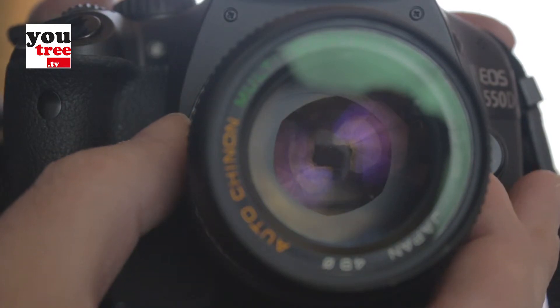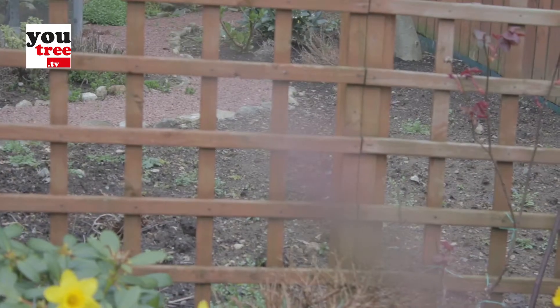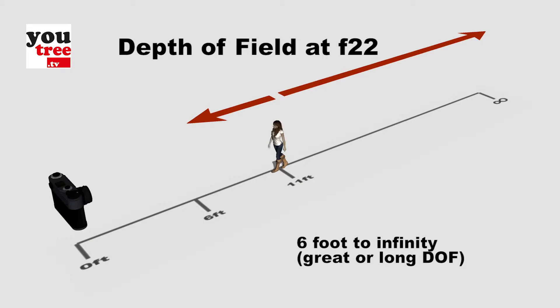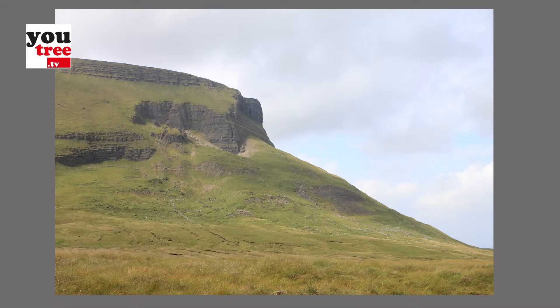So why would you need to change this setting? The iris or aperture also controls the depth of field. At f22, if an object is 11 feet away — just over 3 metres — then everything from 6 feet away to infinity will be in focus. This is called great depth of field and is useful for taking photographs of landscapes.